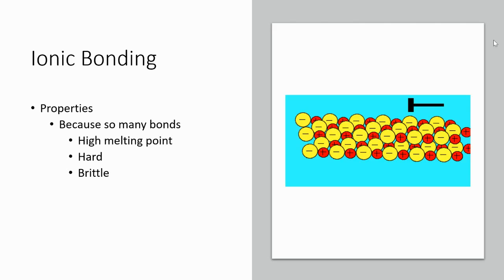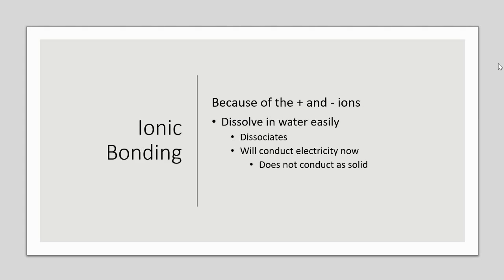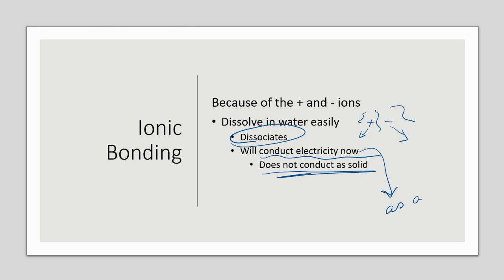The lattice explains the properties of ionic compounds. They have really high melting points because of those many, many forces of attraction. They're also hard for the same reason, and brittle — if we were to break them, they're going to cleave right along a line, not be squishy at all. Because of the positive and negative ions, ionic compounds dissolve in water fairly easily, and when they do, they dissociate — the positive ion and negative ion move apart and water gets in between. The fact that the ions dissociate and move freely around in the water allows it to conduct electricity, but only as a liquid or solution, not as a solid.